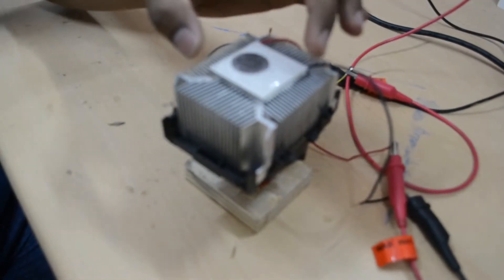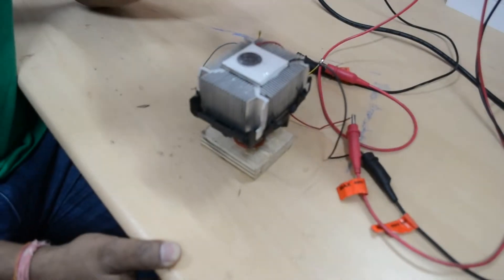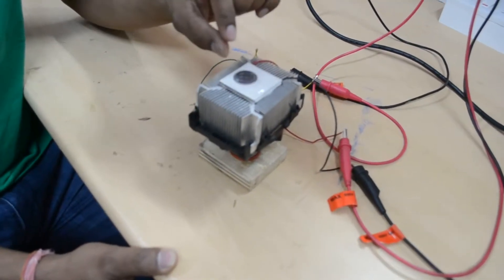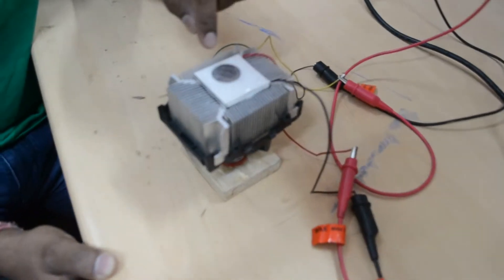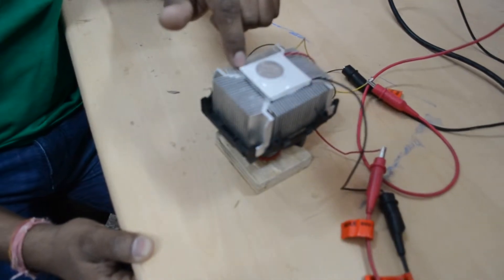Here we are using the Peltier module that is working on the principle that if we are giving the potential to it, there will be temperature difference between two surfaces. Here top surface is cold and bottom surface is hot.